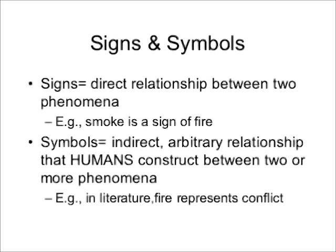To do this, we need to understand that there's a distinction between signs and symbols — they are not synonyms for one another. A sign is when there is a direct relationship between two phenomena. For instance, if you smell or see smoke in your house, you're going to assume that a fire is present, because there is a direct relationship between smoke and fire, regardless of whether or not humans were present.